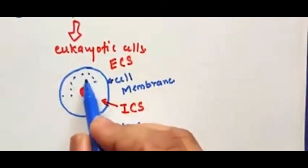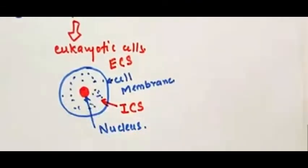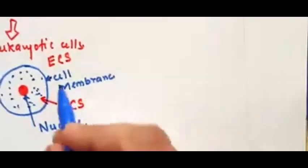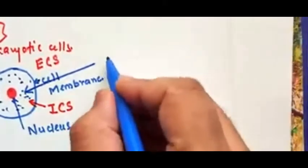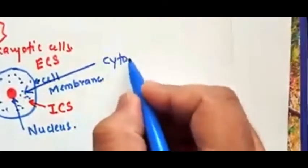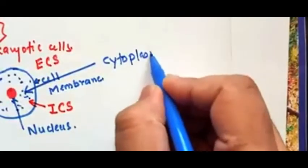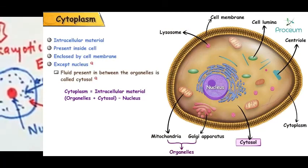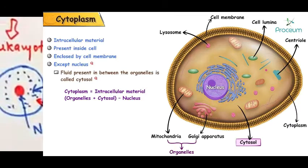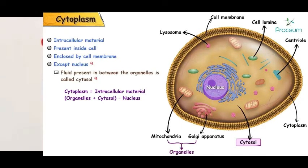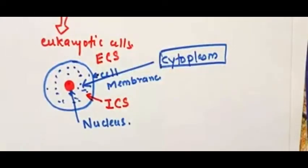Now, what is inside the intracellular space? This particular area is basically called the cytoplasm. Things inside the intracellular space are often referred to as cytoplasm. A cell is basically a mass of cytoplasm that is bound externally by the cell membrane.